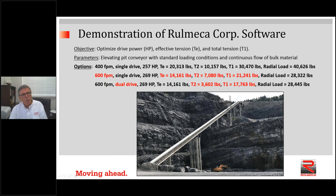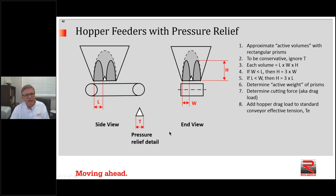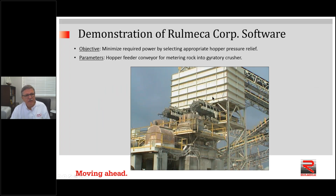In the few minutes remaining, I want to show how to use the program for special loading conditions. You can calculate hopper feeder requirements, and power required for belt plows, a slider bed, cleated belt, or a tripper. This is beyond the scope of today's webinar, but we have two 10-minute videos in our tutorial explaining how to decrease the active volume in a hopper to decrease conveyor drag. The active zone in a hopper with a single opening would be large, while welding angle iron across the openings reduces that active zone significantly.